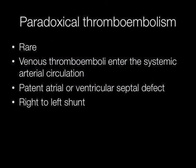In paradoxical thromboembolism, the emboli gain access from the venous circulation into the systemic arterial circulation through a patent atrial or ventricular septal defect where there is a right-to-left shunt. Very rarely, systemic thromboembolism may be paradoxical.